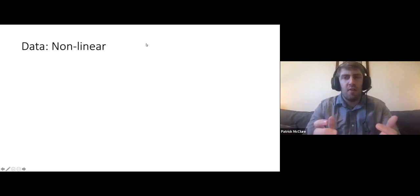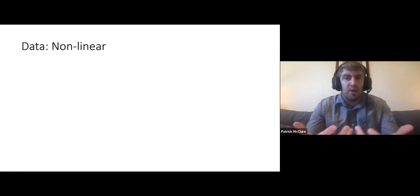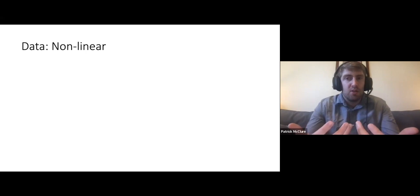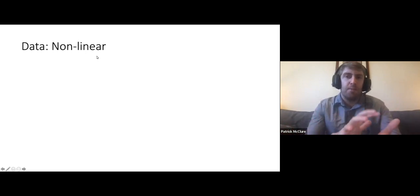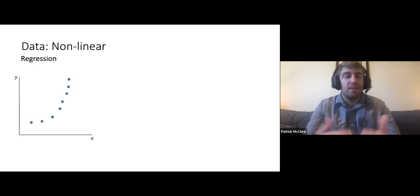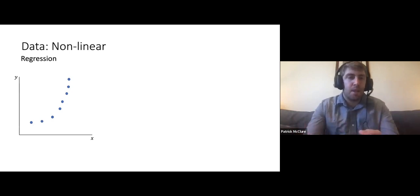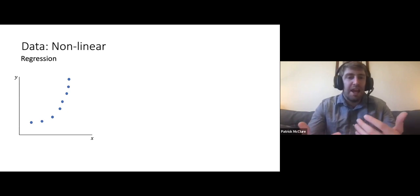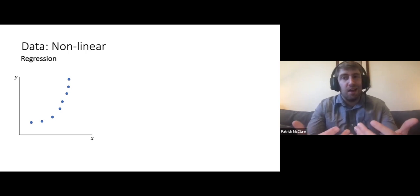The question might come up: why would we want to use neural networks at all? What's wrong with using linear models all the time? This really comes back to the first key component we looked at, which is data. Not all data can be well described using a line. Here we have some classic regression data, and it looks more like a parabola than a line.